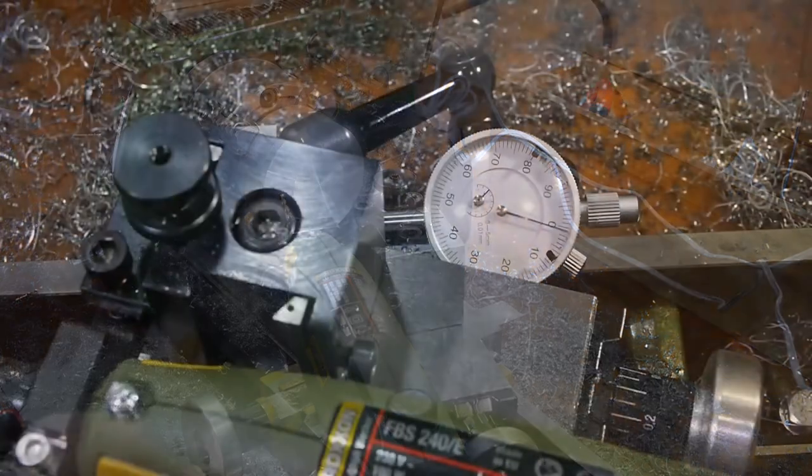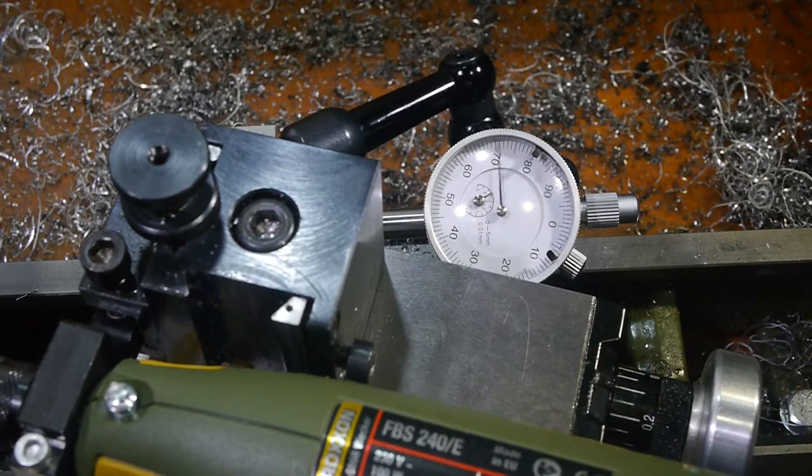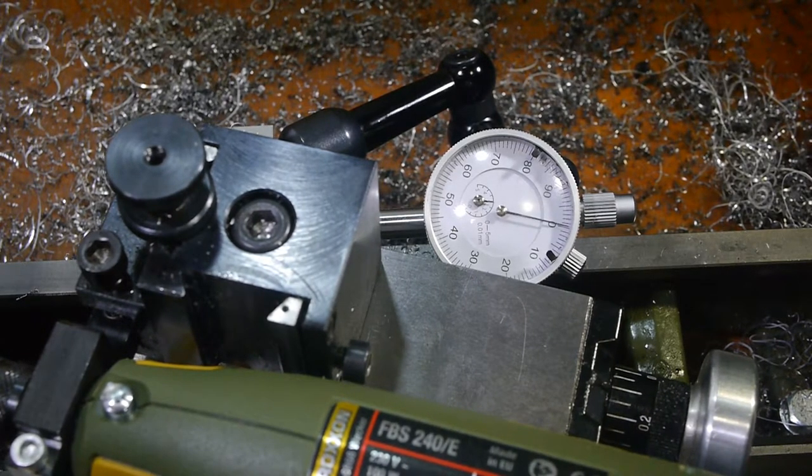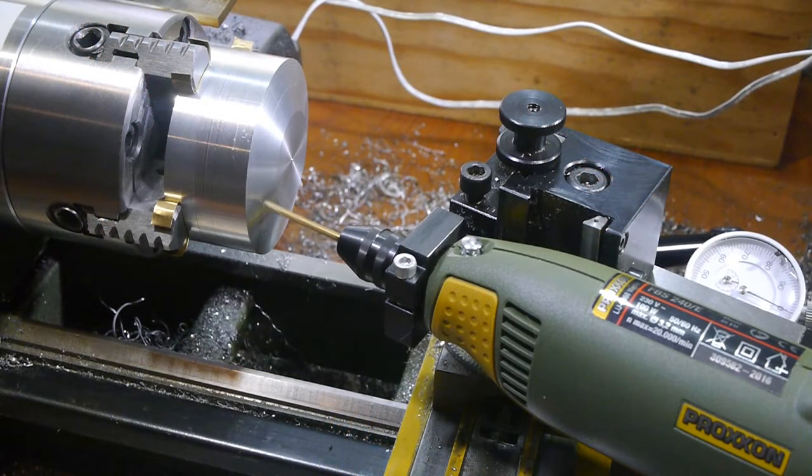I set up an indicator as a carriage stop, so I could reliably return the carriage to the start position. I needed this as I was going to be moving the carriage as a side effect of using the lead screw to measure the headstock rotation.